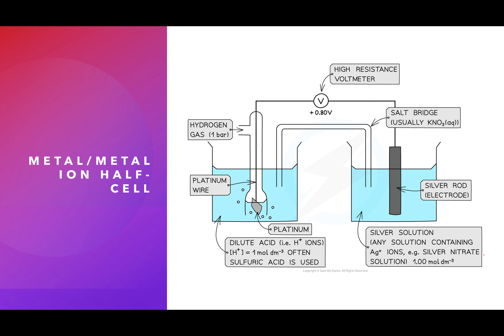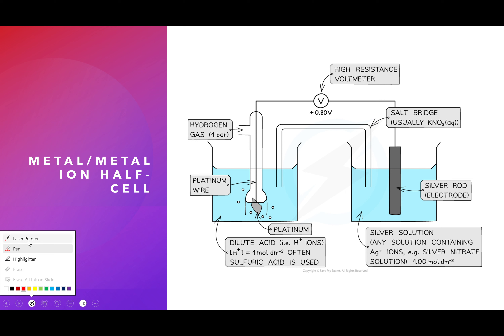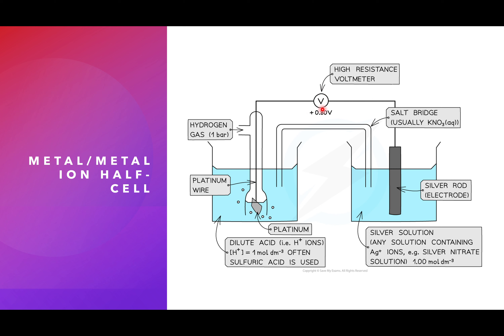Similar to what I was saying when I first looked at this topic, I use these schematics because they're relatively straightforward to draw. The standard hydrogen electrode would not be contributing anything to the voltage, therefore the true voltage of this cell is shown, which is +0.80 volts. The positive sign is important.